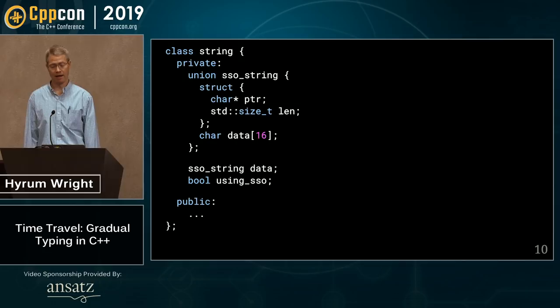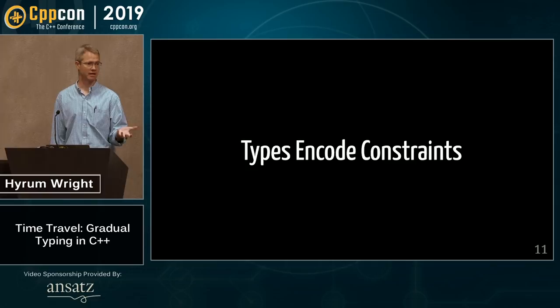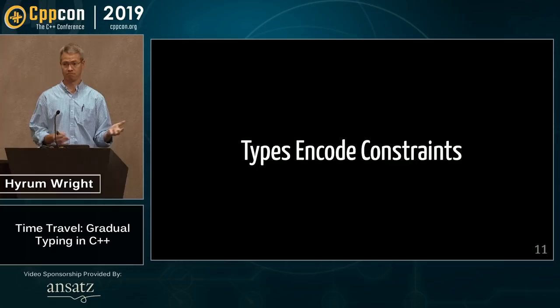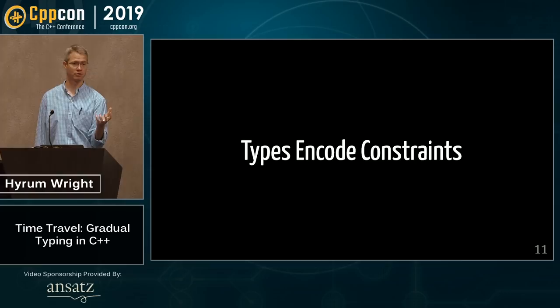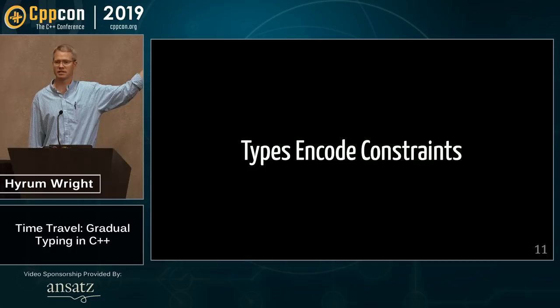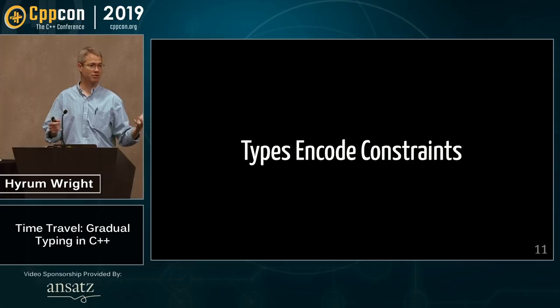Why do we have types? Types encode constraints — they're a way to encode limitations on what you can do with data or values in C++. If we didn't want limitations, everything would be an int or a char. Types restrict what we can do, and that gives us power: the ability to reason about higher-order things in software and lets the compiler reason about it too. These come at a cost — as pointed out recently, that cost is in refactorability.